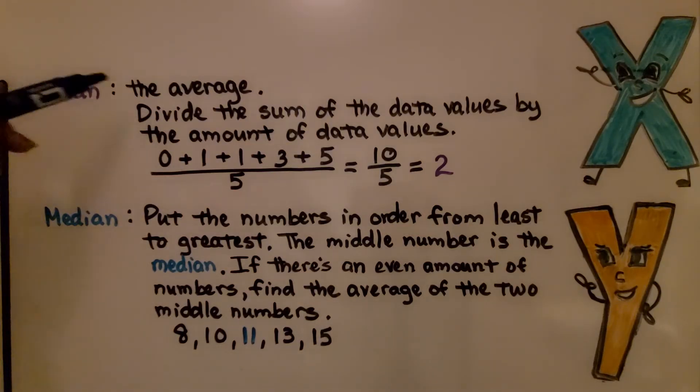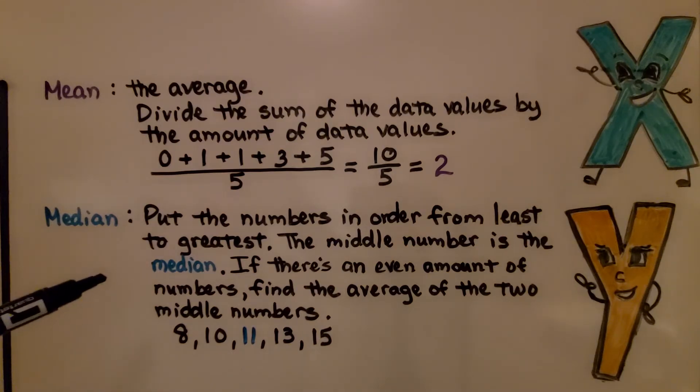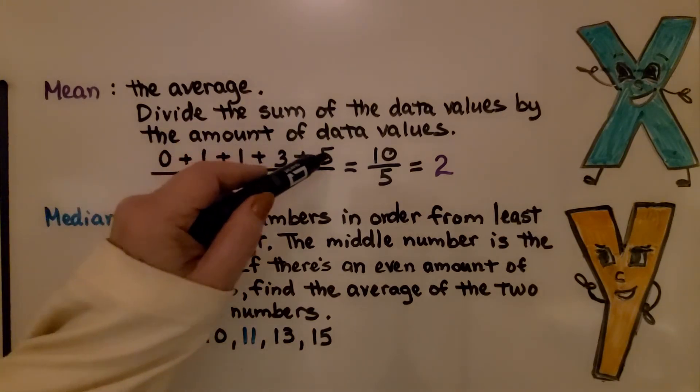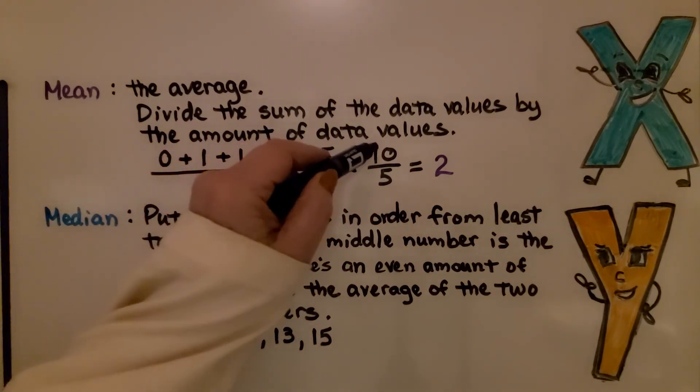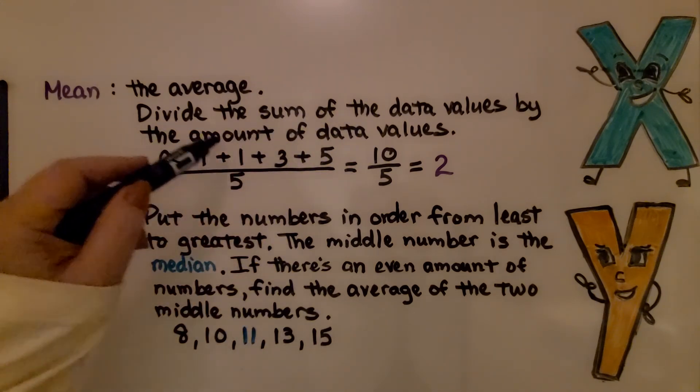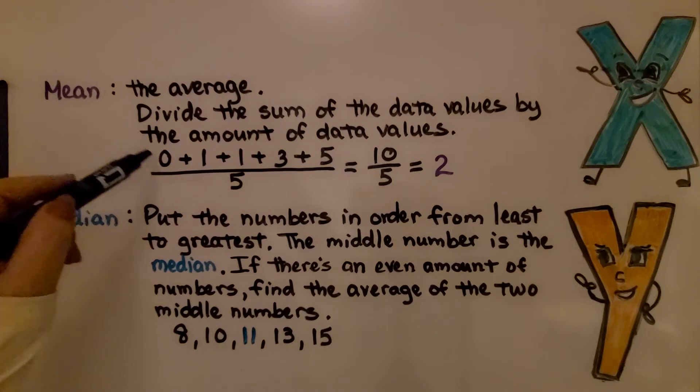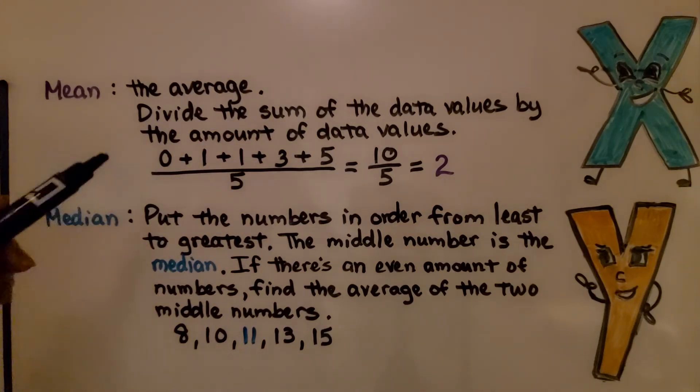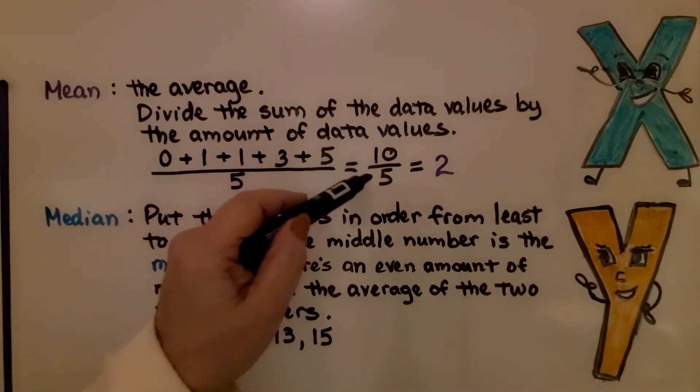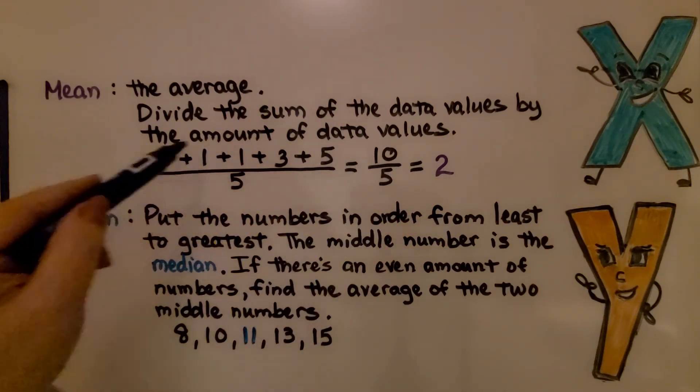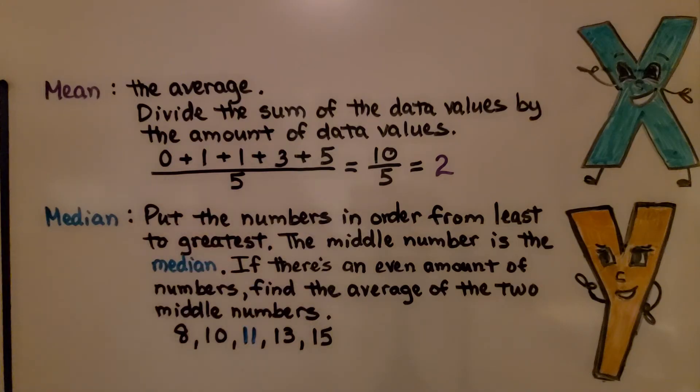So for a quick review, the mean, that's the average. We divide the sum of the data values by the amount of data values. If our data values are 0, 1, 1, 3, and 5, we add them up. We get 10. There are 1, 2, 3, 4, 5 data values. Remember, we include the zero because that's one of the answers. So we're going to do 10 divided by 5. 10 divided by 5 is 2. That means the mean, the average, for these data values is 2.